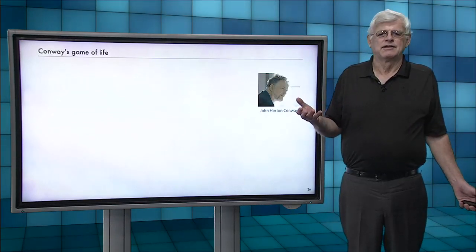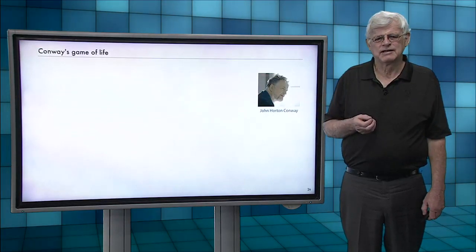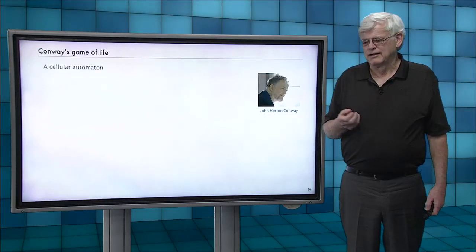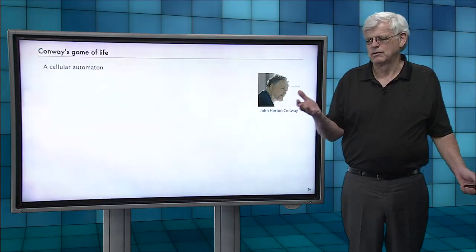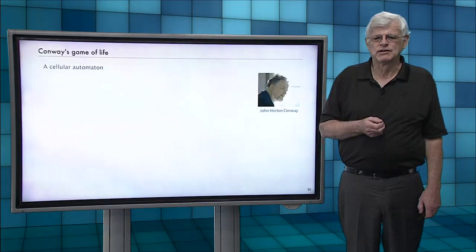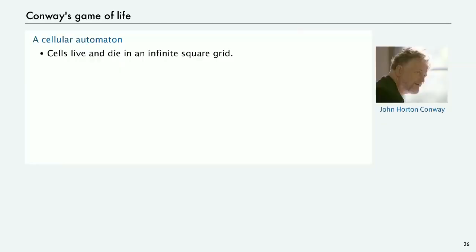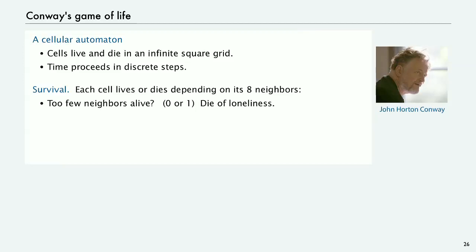Here's just an example. Maybe you've seen this example. It's called the game of life. It's a different simple formal model of computation called a cellular automaton. So, we think of an infinite square grid with cells that can live and die under specific rules. It's discrete. Time proceeds in discrete steps. And there's a couple of rules that determine whether cells live or die. So, it depends on the values of its eight neighbors. If a cell has too few neighbors alive, either zero or one, it dies of loneliness.